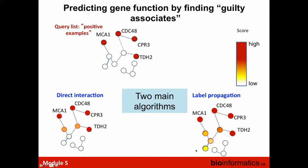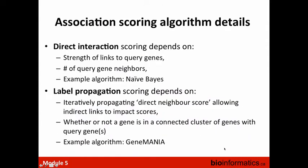This allows you to distinguish disconnected genes from those with indirect connections. An example algorithm within direct interaction methods is Naive Bayes. An example in label propagation is GeneMANIA itself. Other algorithms in this space include HotNet and LabelProp. In general, they all share the property of propagating indirect neighbor scores so that indirect links to the query list can influence gene scores.